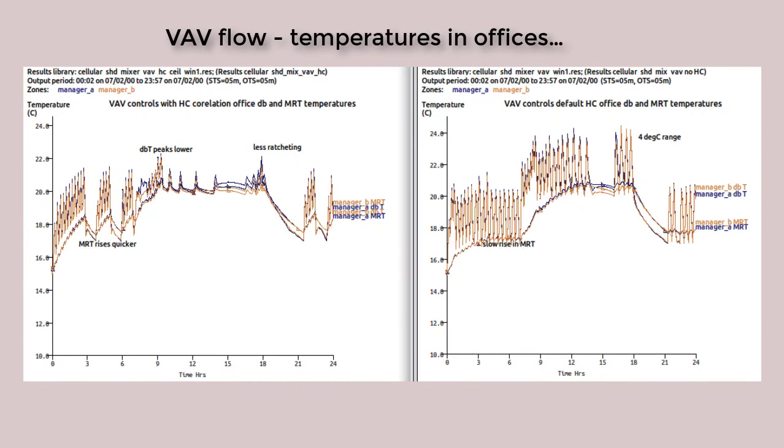Let's turn our attention to VAV flows in the offices. On the right we have the default initial model, on the left we have the model with the addition of heat transfer regime. The ratcheting is definitely, again, different. It takes much longer for the mean radiant temperature in the space. In the original case, that's actually maybe 2 o'clock in the afternoon before we reach a stable condition, whereas the stable conditions happen around 10 o'clock in the morning.